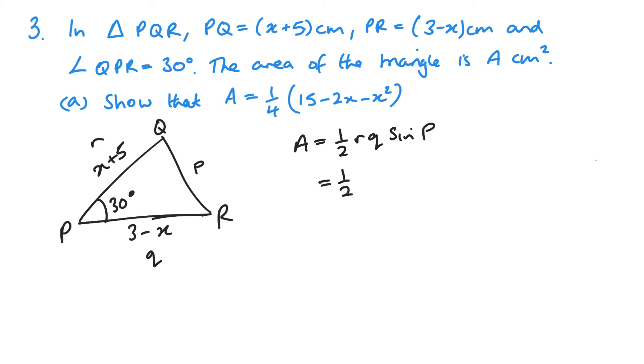So a half times X plus 5 times 3 minus X times sine 30. Now sine 30 is a half. So a half times a half is a quarter. So I can pop that straight in there. And then I'm going to expand my double brackets here. So X times 3 is 3X.